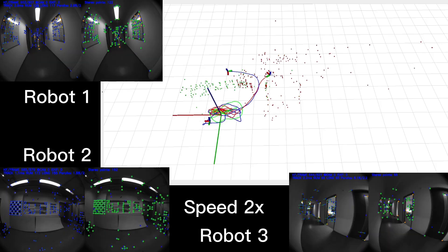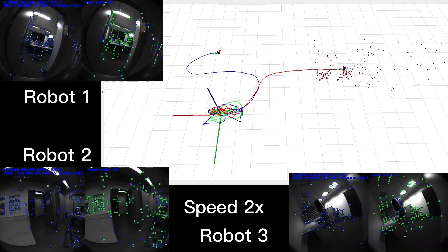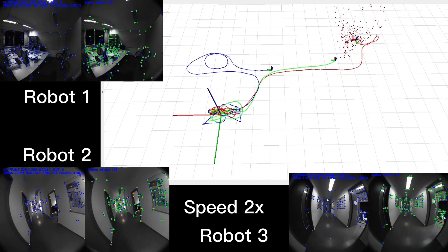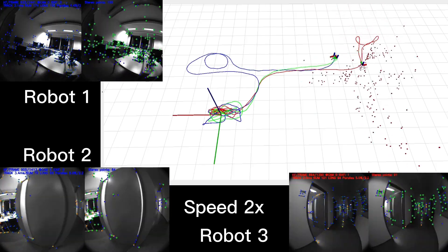The trajectories and visual landmarks estimated by D-Square VINS are shown in the video. The different colored landmarks indicate that different drones optimized them.